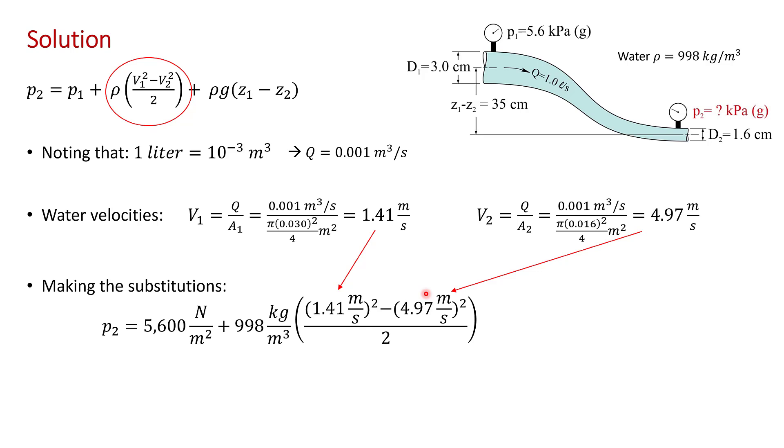Note that the velocity at the outlet is much higher than at the inlet, so the flow has gained kinetic energy. So, we expect this term to be negative. The gain in kinetic energy at the outlet will come at the expense of pressure. So, this is going to decrease the pressure at the outlet.